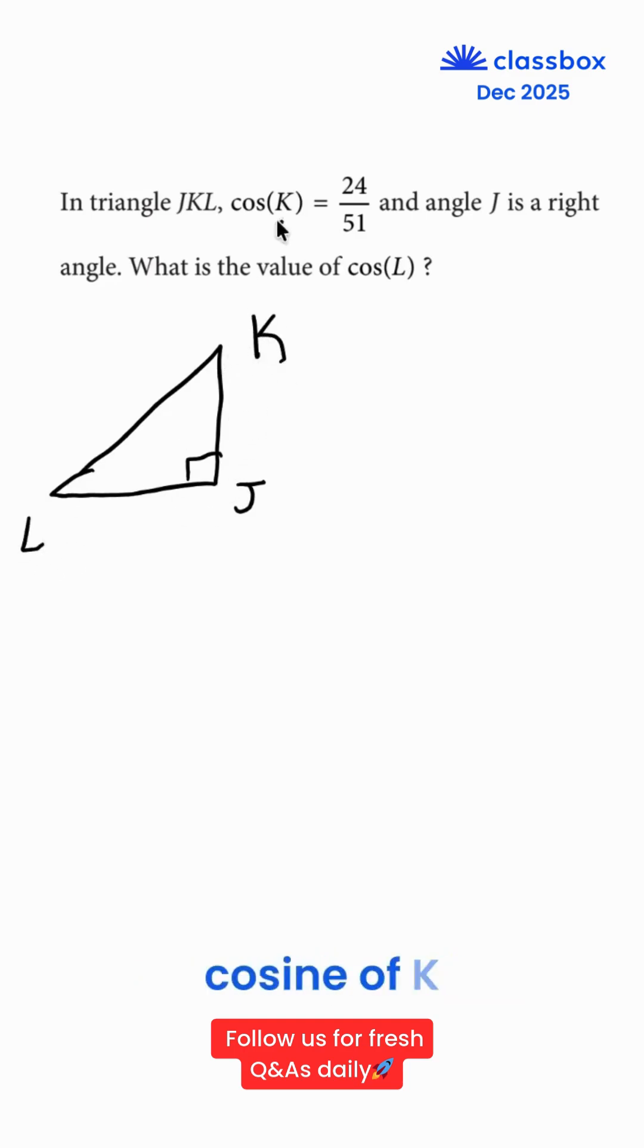We know that cosine K is 24 over 51. Remember, cosine of whatever is equal to adjacent angle over your hypotenuse. So our adjacent angle would be A, which is 24 over here.